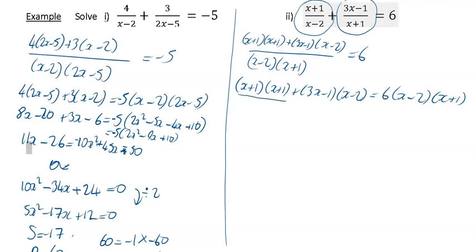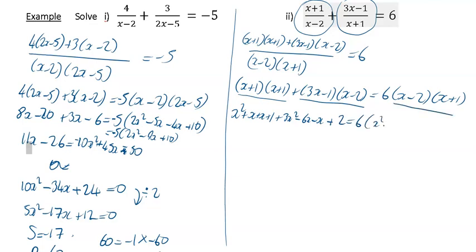The first pair of brackets multiplied out gives x squared plus x plus x plus 1. The second pair multiplied out gives 3x squared minus 6x minus x plus 2. Then I'm going to have 6 upon — multiplying out that bracket gives x squared plus x minus 2x minus 2. Tidying up the right hand side gives x squared minus x minus 2.